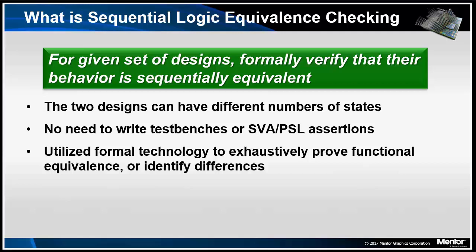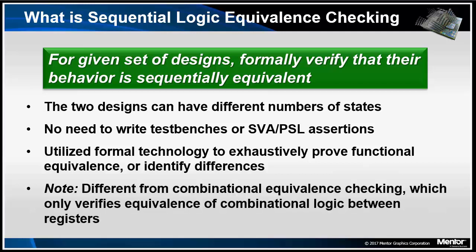Simulation cannot prove sequential equivalence. With test benches, simulation may find functional differences depending on the quality of the test benches. SLEC is different from combinational equivalence checking. Combinational equivalence checking only verifies the equivalence of the combinational logic between registers, and thus requires the two designs to have the same number of registers. Sequential differences, such as retimed pipelines, can break the maps between registers and render combinational equivalence checkers ineffective.